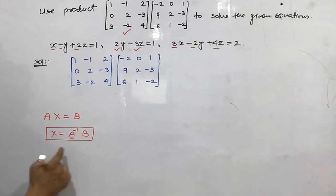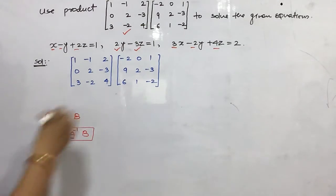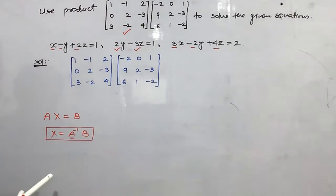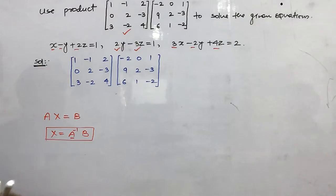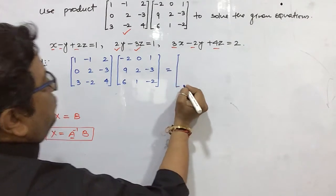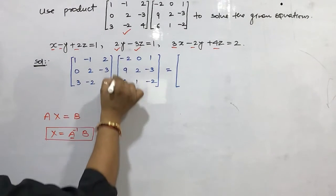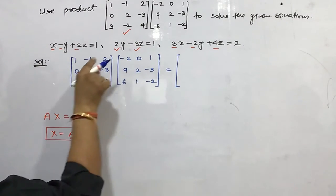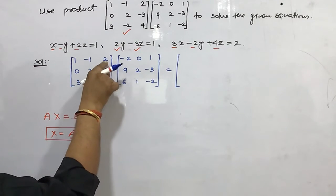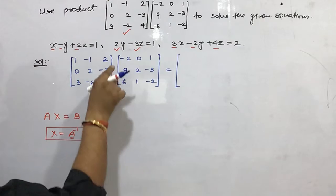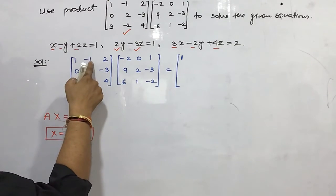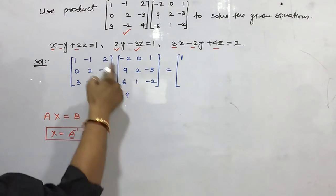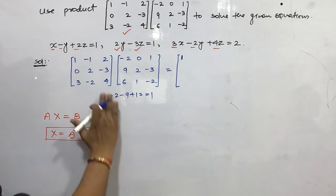For finding A inverse we need the co-factor and the determinant. So first we are going to find out the product of the given two matrices, and by using the product we will solve for x, y, z. Multiplying the first row by the first column: -2, -9, and 12, giving us 1×(-2) - 1×9 + 2×6 = -2 - 9 + 12 = 1.